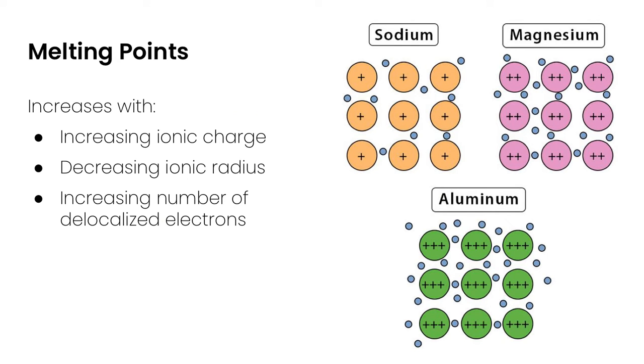Now if we look at melting points of metals, we can actually explain melting points of metals with the structure of this metallic bond. So melting points increase with increasing ionic charge. If we take a look at, for example, a plus two ion, something like a magnesium ion versus a sodium ion or a plus one, the electrostatic attraction between the ions and the delocalized electrons are stronger in the plus two, so that's going to have a higher melting point.